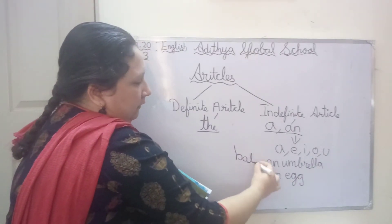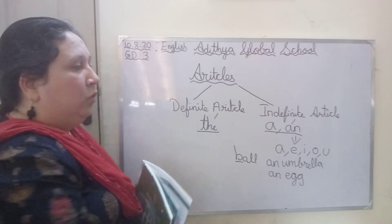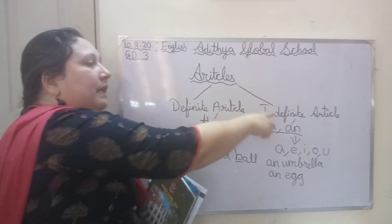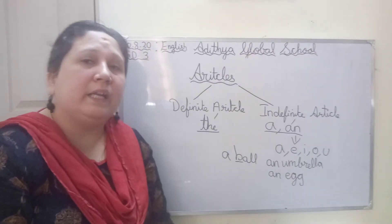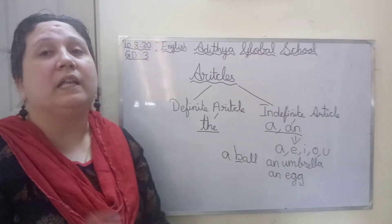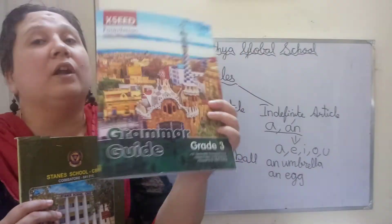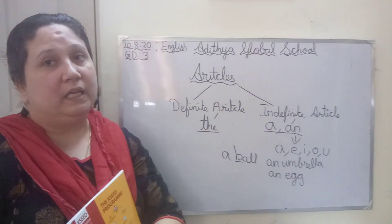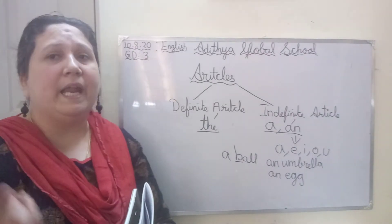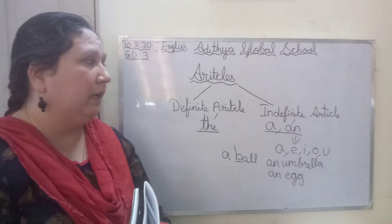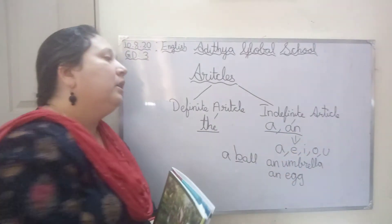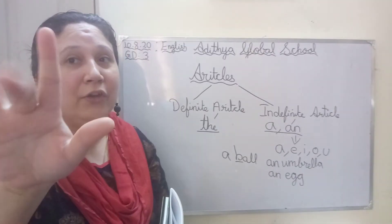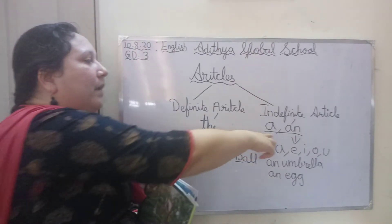Now ma'am says BALL. Is BALL a vowel? No. So we use A BALL. So is it clear? There are two types of articles: definite and indefinite. Definite means specific — there we use THE. Indefinite article uses A and AN. We use AN in front of vowels. What are the vowels? A, E, I, O, U — these five are the vowels. There we use AN.